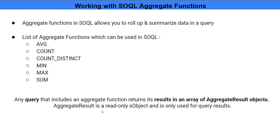For example, we can use average, sum, count, min, max, and so on. When we use aggregate functions and want to process the output back in Apex, we have a very special way to handle it — we use the AggregateResult object. We'll see how to use AggregateResult to read the output of an aggregate SOQL function.